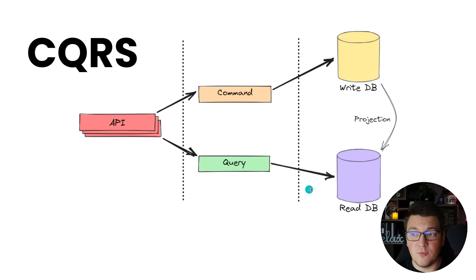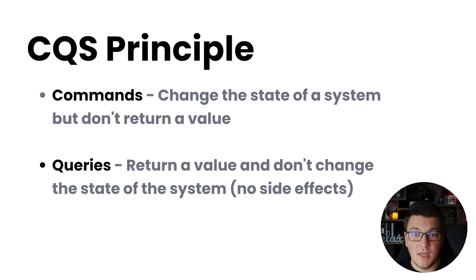CQRS splits the flows for writing the data from the flow for reading the data, so we end up having the commands on the write side and the queries on the read side. Before the CQRS pattern was invented, there was the CQS pattern or principle. It stands for Command Query Separation, and it focuses on individual methods on an object by distinguishing them into commands, which are methods that can change the state of a system but don't return a value, and queries, which are methods that return a value and don't change the state of a system. In other words, queries do not have side effects.